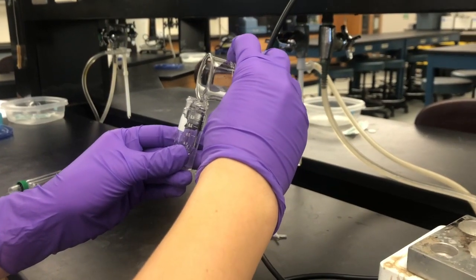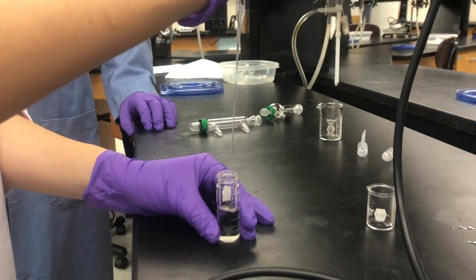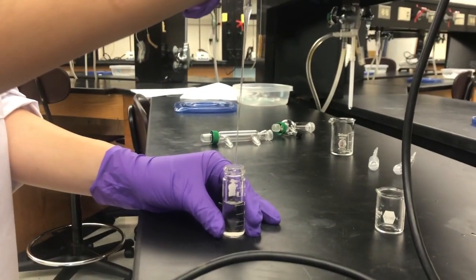Pour the 3 mL of 2-methylcyclohexanol into a conical vial. Add the phosphoric acid dropwise using a pipette.